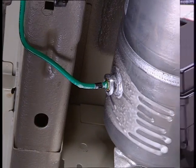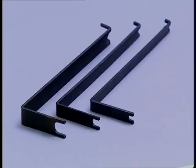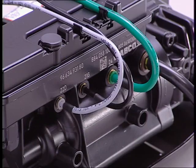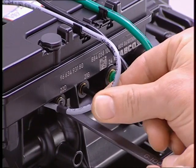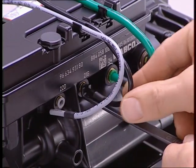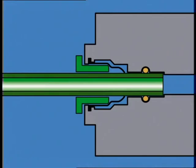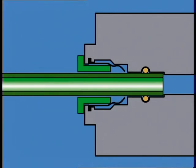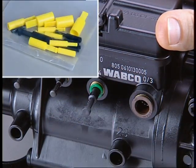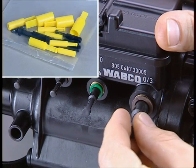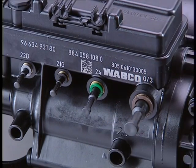Leak detection is effected using a conventional bubble generation product. A special tool has been developed to remove the pipes — it is essential to use this tool. When you press on the ring, the tool releases the pipe retaining claw. The parts removed must be rubbed down with the cleaning kit and stored in a dust-free environment.